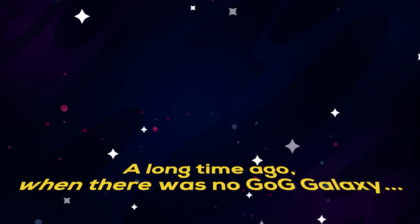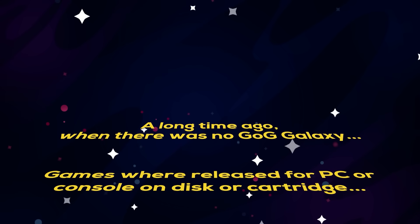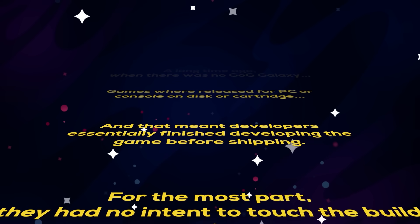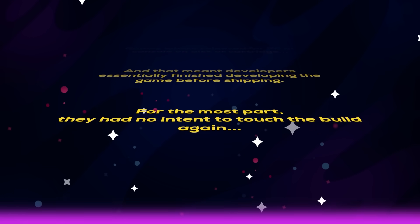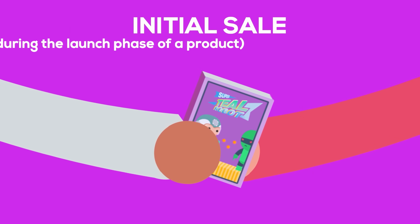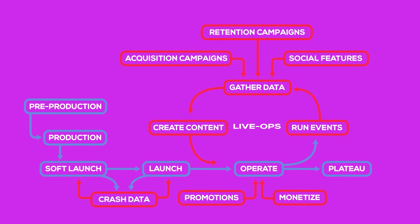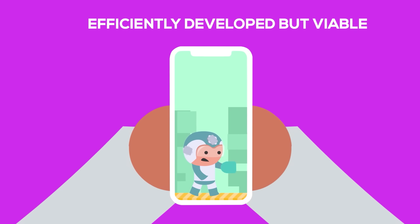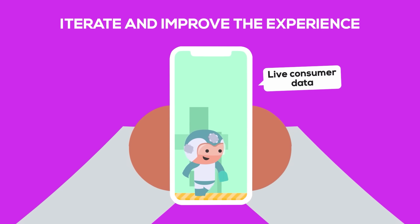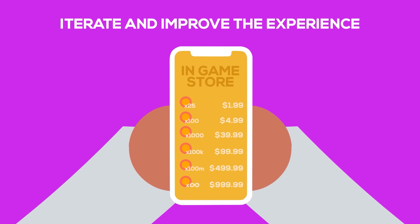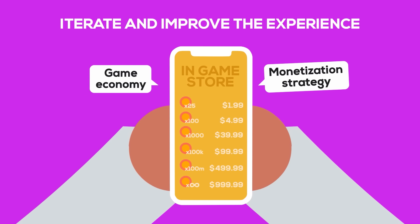This change in user monetization has had a ripple effect on how mobile games get developed. Historically, games were released for PC or console on disk or cartridge, and developers essentially finished developing the game before shipping — they had no intent to touch the build again, and customers were monetized one time only, typically at the point of initial sale. Mobile games changed that approach, and development teams have embraced the live-op structure, which involves shipping an efficiently developed but viable product with the intent to iterate and improve the experience based on live consumer data. These live improvements aren't just focused on gameplay, but increasingly on the game economy and monetization strategy.